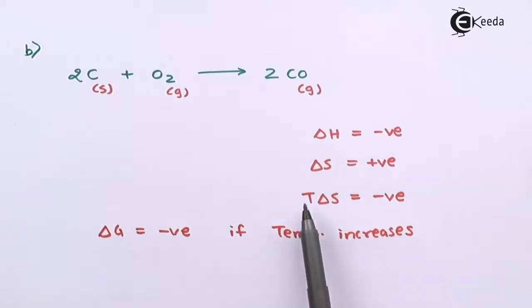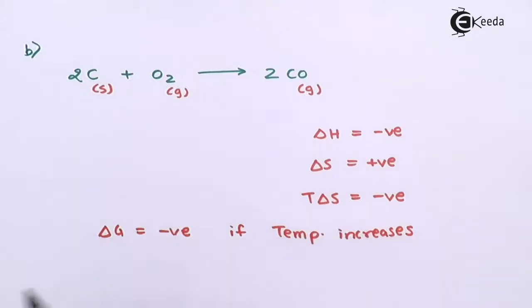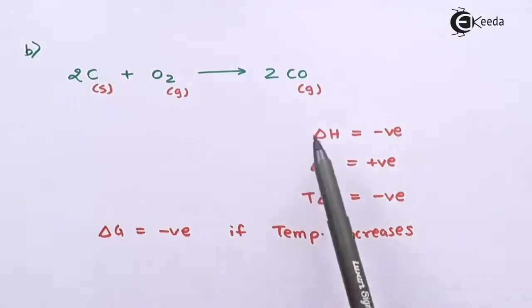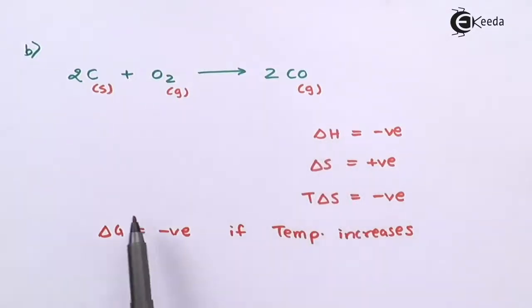So as temperature increases, T·delta S becomes more negative, and thereby delta G also turns more negative. Comparing delta H and T·delta S based on the formula, delta G will be negative — this is the key conclusion for the second condition.